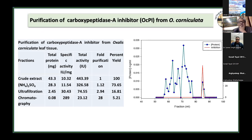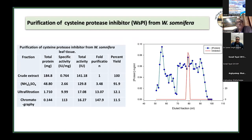The carboxypeptidase inhibitor was purified using conventional methods — ammonium sulfate fractionation, ultrafiltration, and gel permeation chromatography — achieving 28-fold purification. The cysteine protease inhibitor was also purified to 147.9-fold using the same techniques.